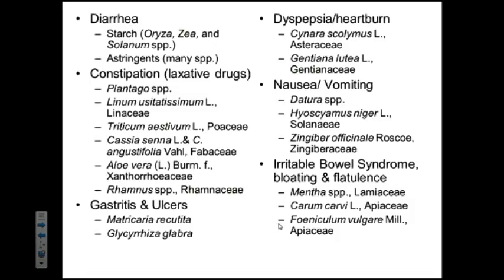How about Glycyrrhiza glabra? What else do you have when you have an upset tummy — you might have some chamomile tea, or some other kind of tea? Mint. This one is licorice — Glycyrrhiza glabra. Anyone want to take a stab at the family? It's a bean. Fabaceae. Good.